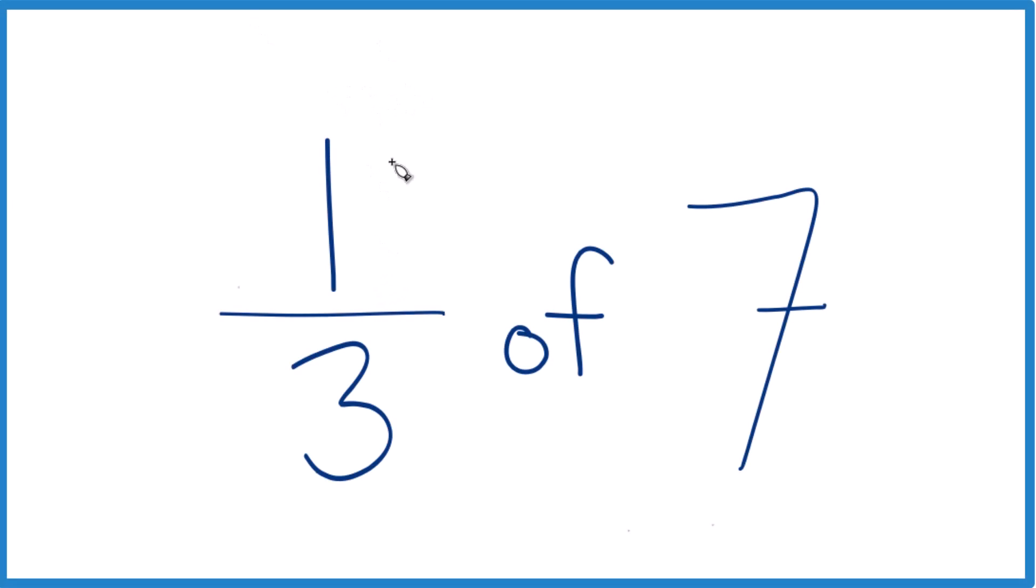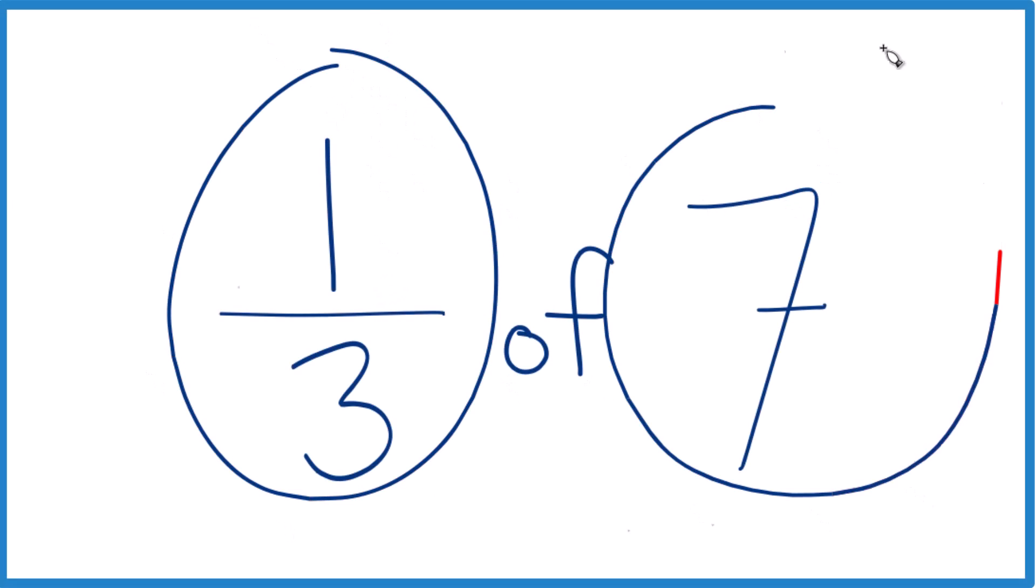So we want to find what is one-third of seven. So we're taking the fraction one-third, and we're going to figure out one-third of the whole number seven here.